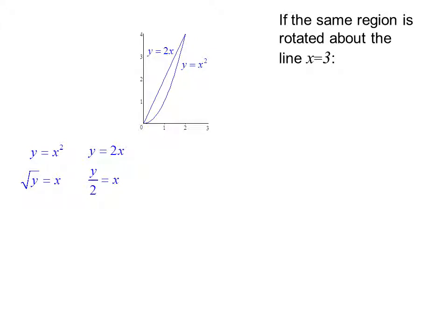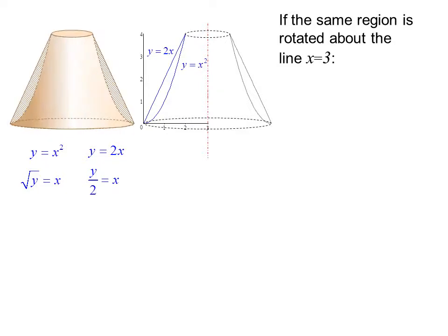If the same region is rotated about the line x equals 3, we get this shape. Once again, this looks something like a lamp shade to me.